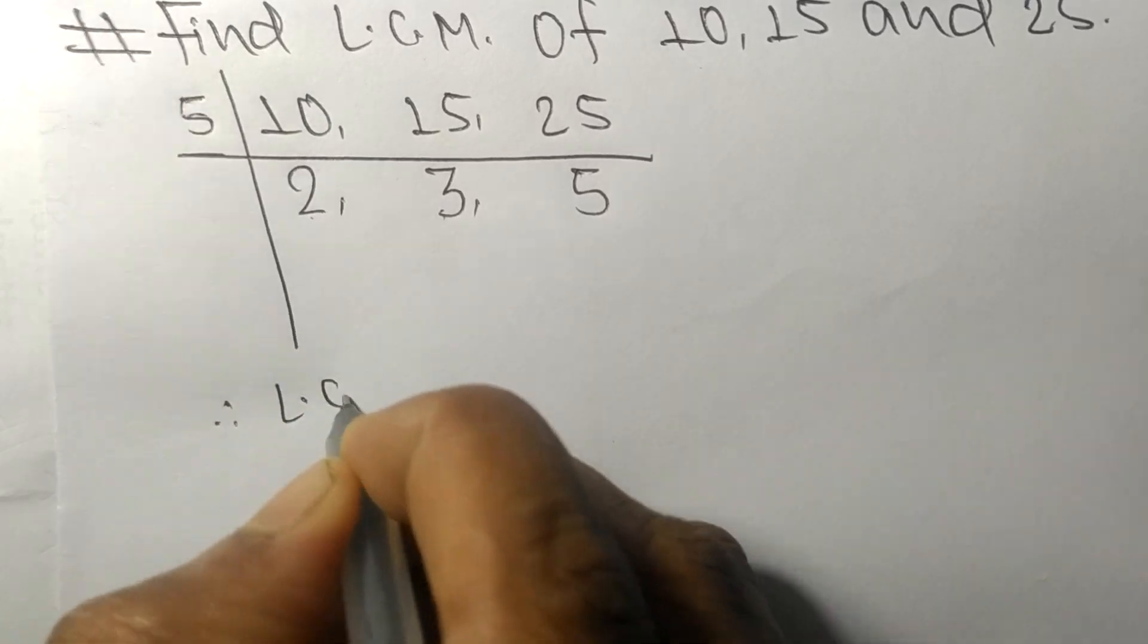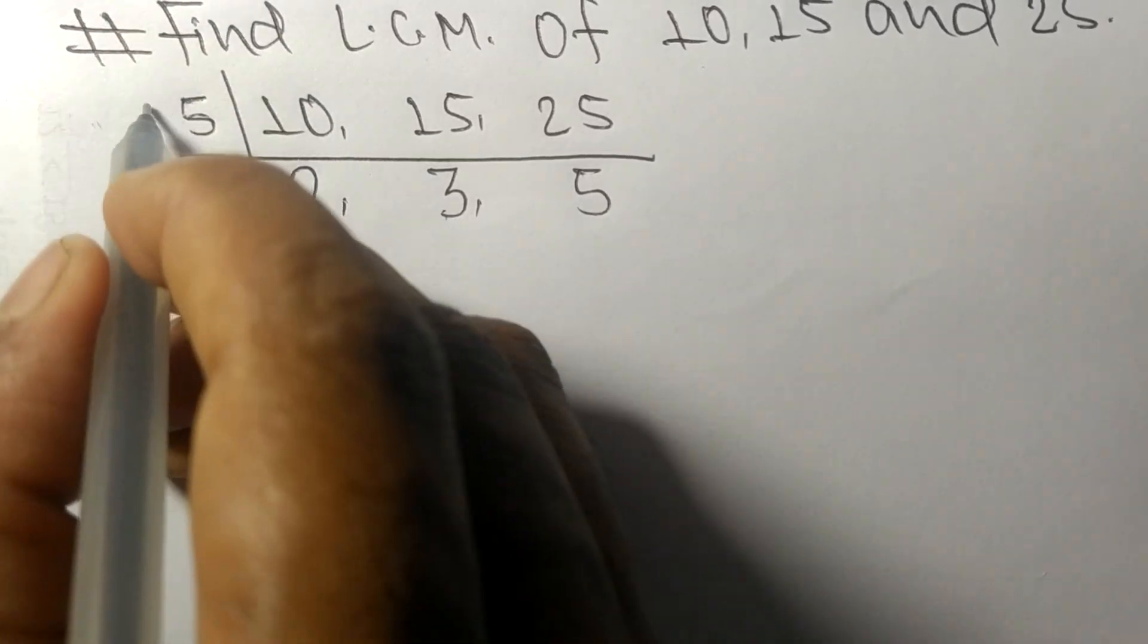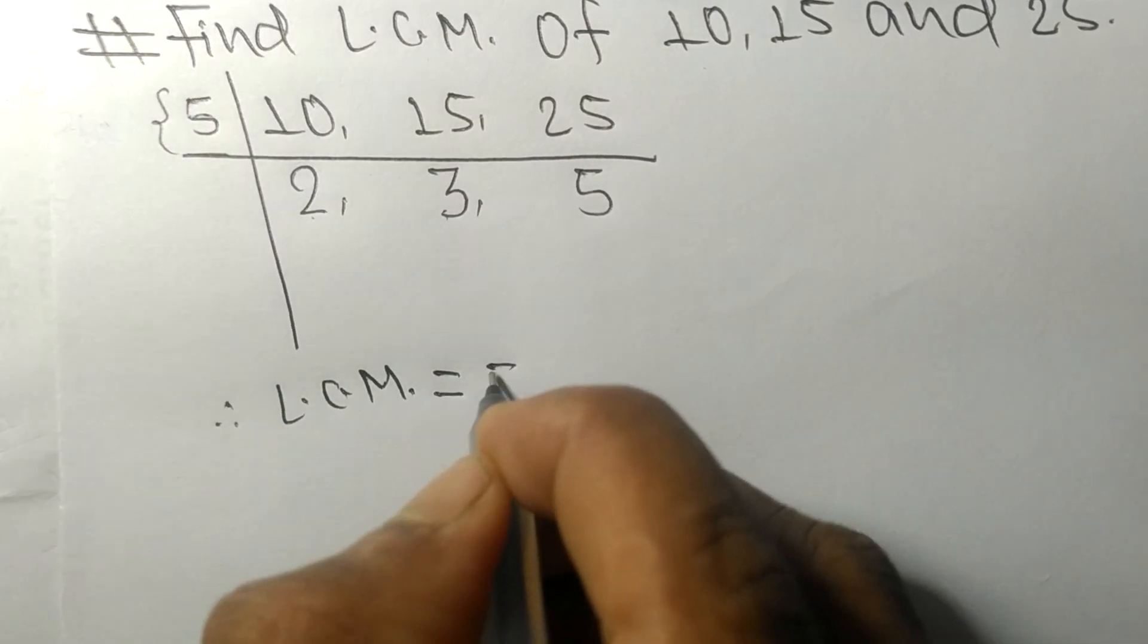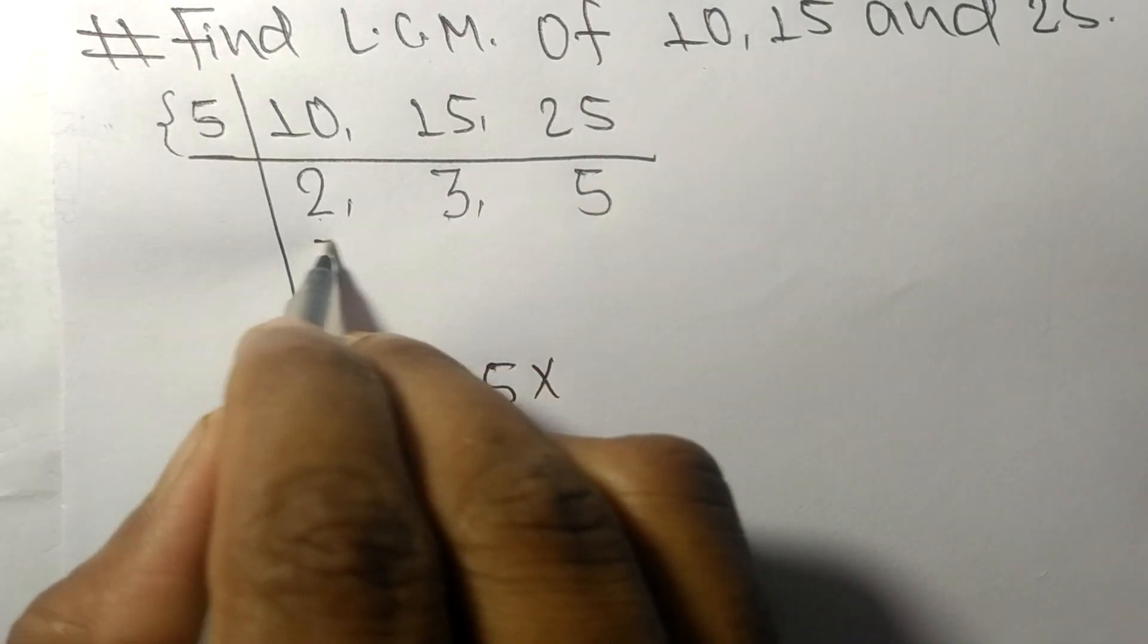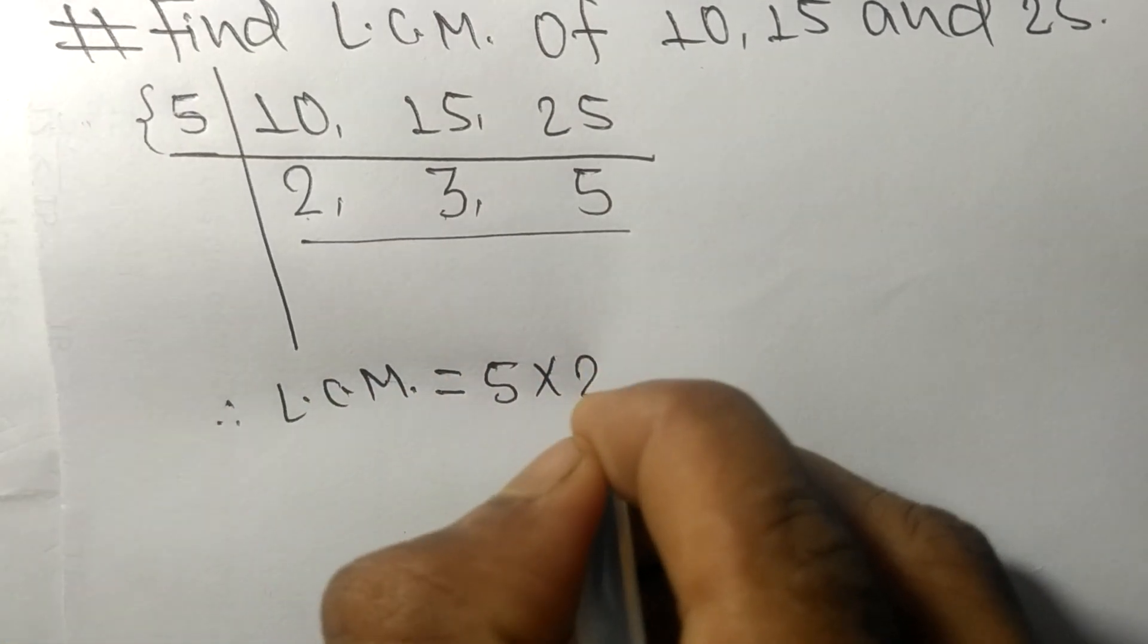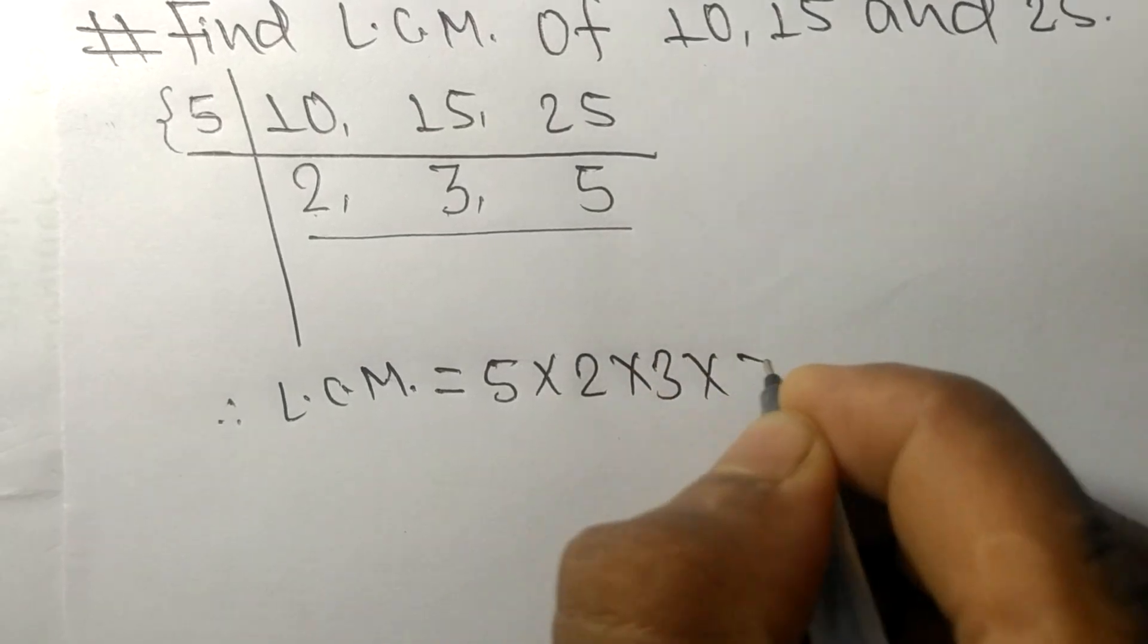Its LCM is equal to, from this side it is 5, from this side it is 2, 3, and 5.